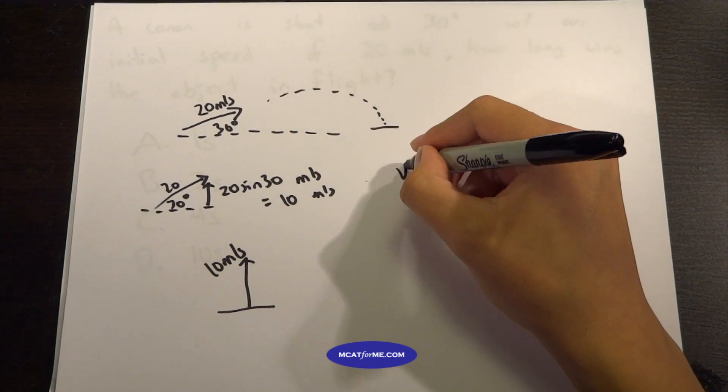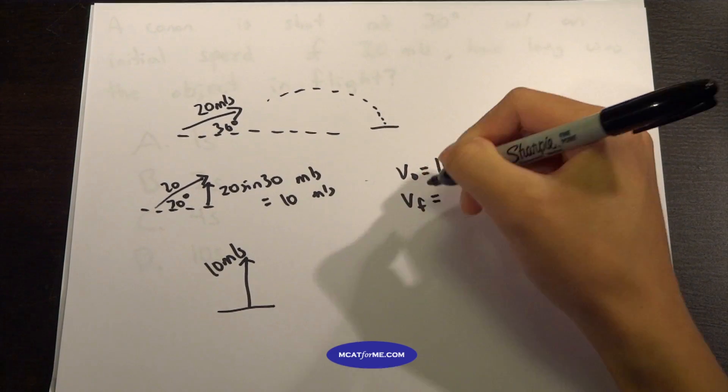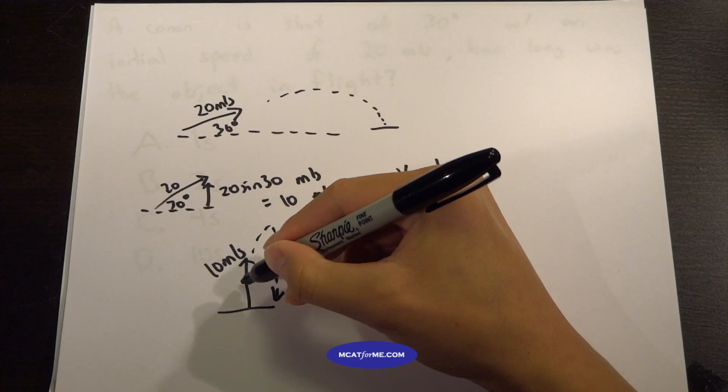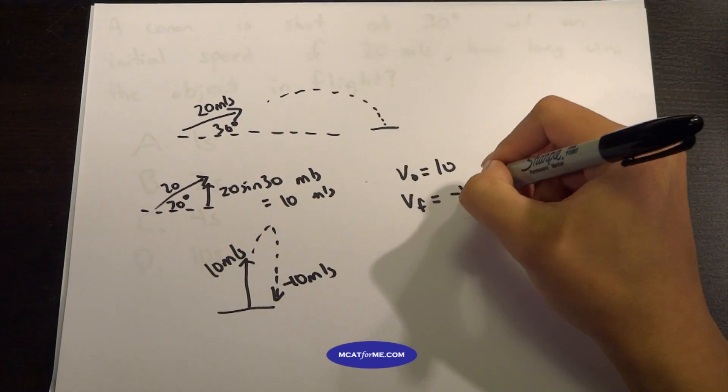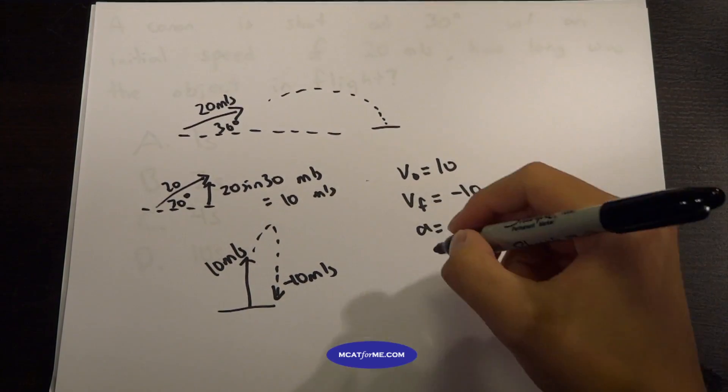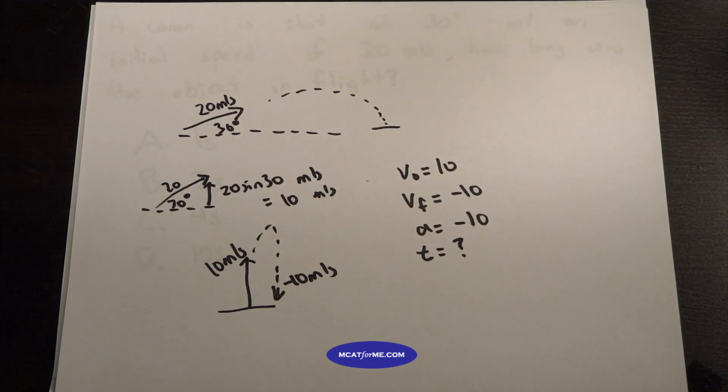So pretty much we can say that V0 equals 10. V final, well V final when it comes all the way back down it will be going the same speed but in the opposite direction, so negative 10 meters per second. Acceleration, always 10 or negative 10. And T equals, well that's what we want to find out. And distance, do we care about that? No, we don't care about distance for this problem.